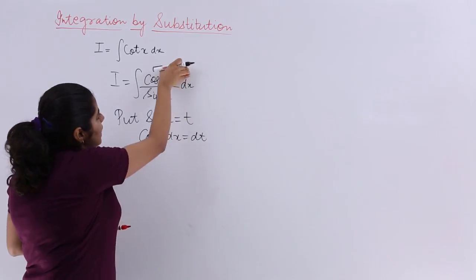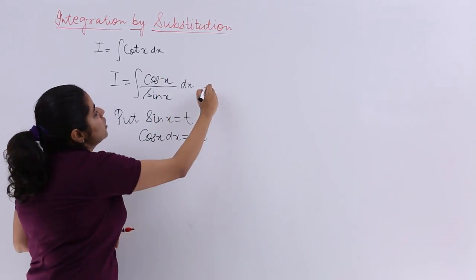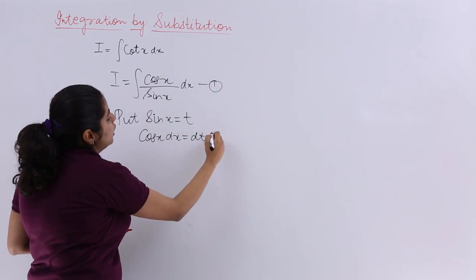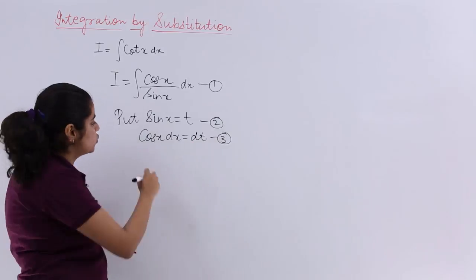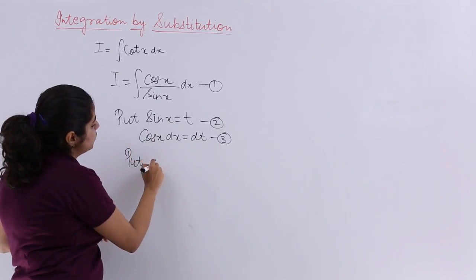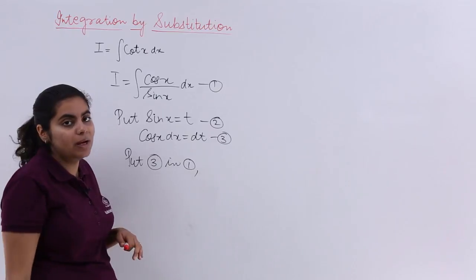Now cos x dx is here and that is dt. So if this is equation 1, this is equation 2, and this is equation 3. Let's see what to do. I will put equation 3 in equation 1.